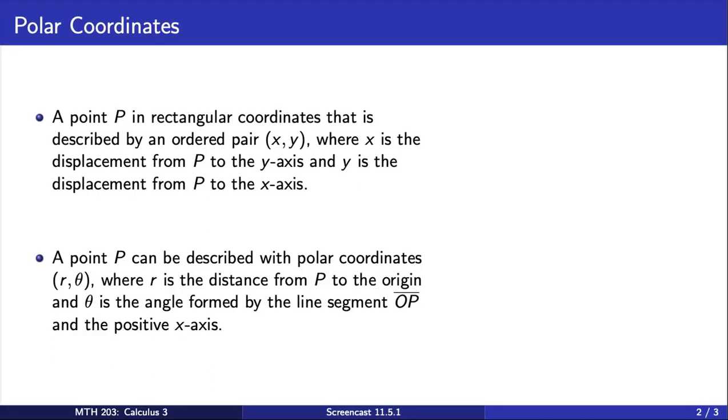A point P can be described with polar coordinates (r, θ), where r is the distance from P to the origin, and θ is the angle formed by the line segment from the origin to P and the positive x-axis.